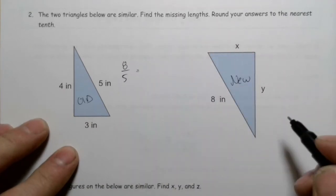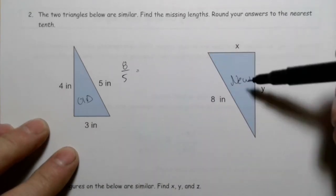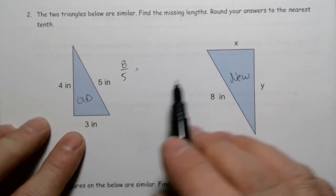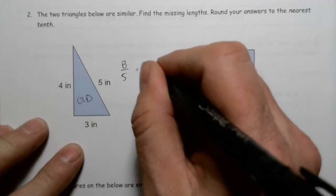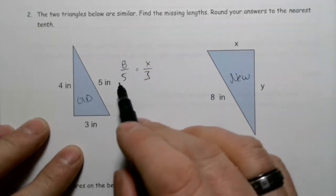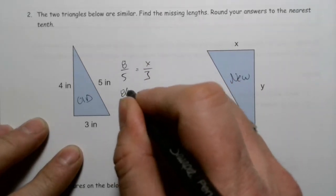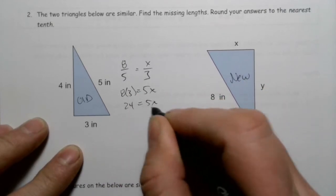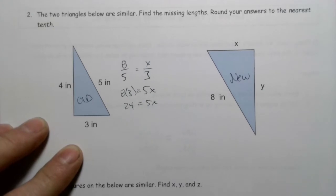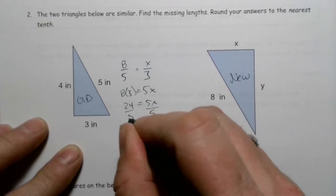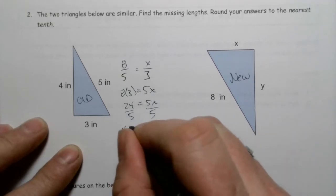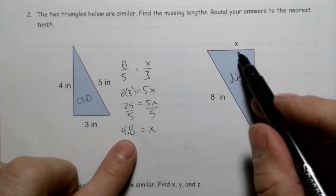Using those corresponding sides, I'll set up 8 over 5 equals x over 3, where x is the new base and 3 is the smaller base of the old triangle. Cross multiplying: 8 times 3 equals 5 times x, so 24 equals 5x. Dividing both sides by 5: 24 divided by 5 equals 4.8. So the new base is 4.8 inches.